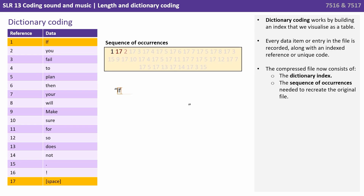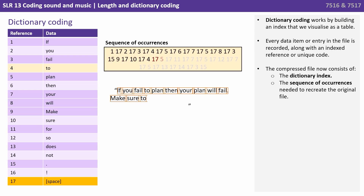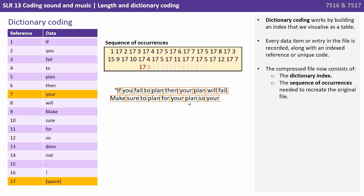Here we can see the original file being recreated or uncompressed. We're taking each number from the sequence, we're looking it up in the dictionary index, and replacing it with the corresponding word.